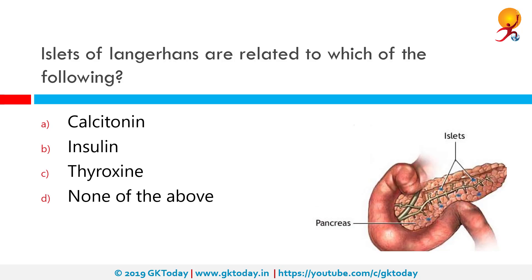Islet of Langerhans is related to which of the following? The correct answer is insulin. The pancreatic islets, or islets of Langerhans, are the regions of the pancreas that contain its endocrine, or hormone-producing, cells.